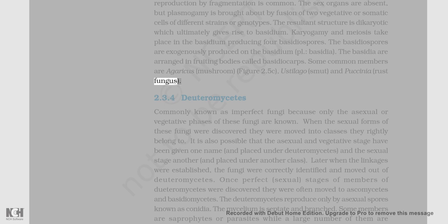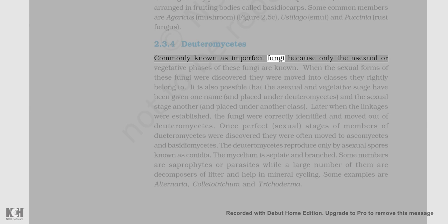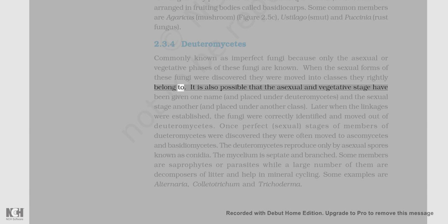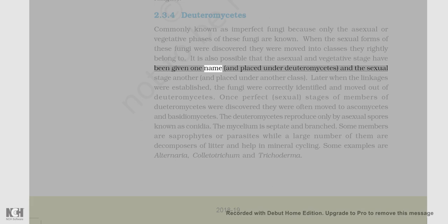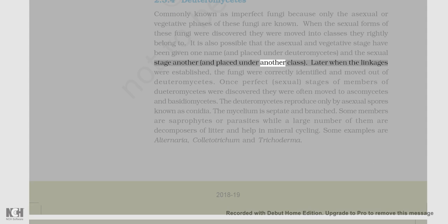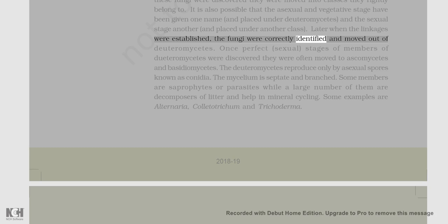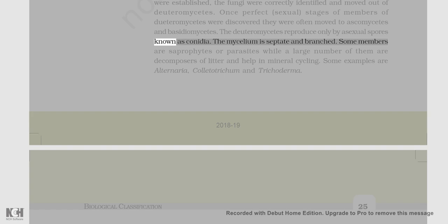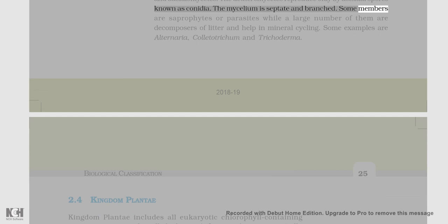2.3.4 Deuteromycetes: Commonly known as imperfect fungi because only the asexual or vegetative phases of these fungi are known. When the sexual forms of these fungi were discovered, they were moved into the classes they rightly belong to. It is also possible that the asexual and vegetative stage have been given one name and placed under deuteromycetes, and the sexual stage another, placed under another class. Once perfect (sexual) stages of members of deuteromycetes were discovered, they were often moved to ascomycetes and basidiomycetes. The deuteromycetes reproduce only by asexual spores known as conidia. The mycelium is septate and branched. Some members are saprophytes or parasites, while a large number are decomposers of litter and help in mineral cycling. Some examples are Alternaria, Colletotrichum, and Trichoderma.